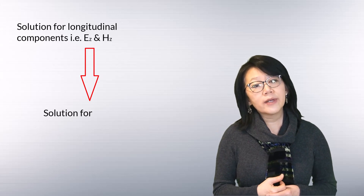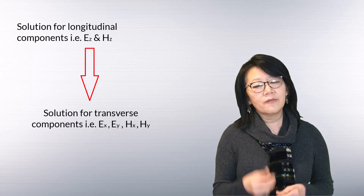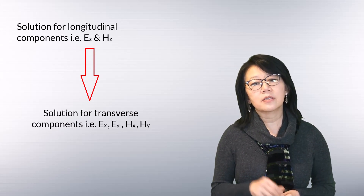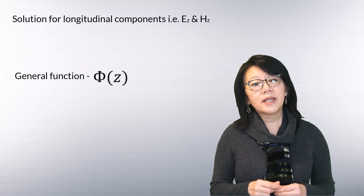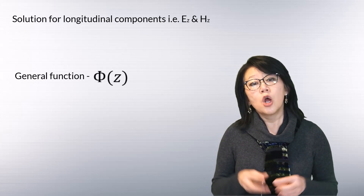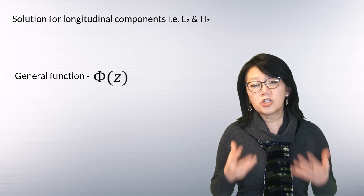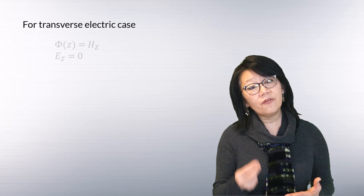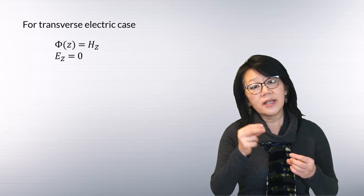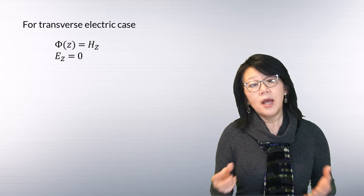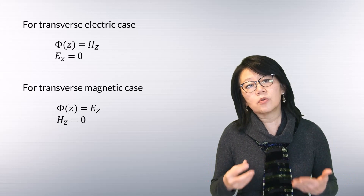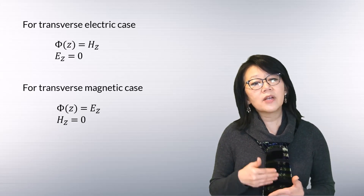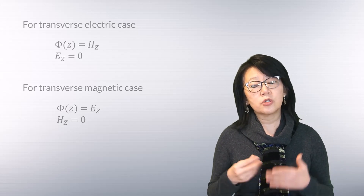Let's consider a general function phi to represent the longitudinal component. For the TE (transverse electric) case, the function equals Hz, as Ez equals zero. For the TM case, this function equals Ez, as Hz equals zero. We'll use the wave equations in terms of these functions.